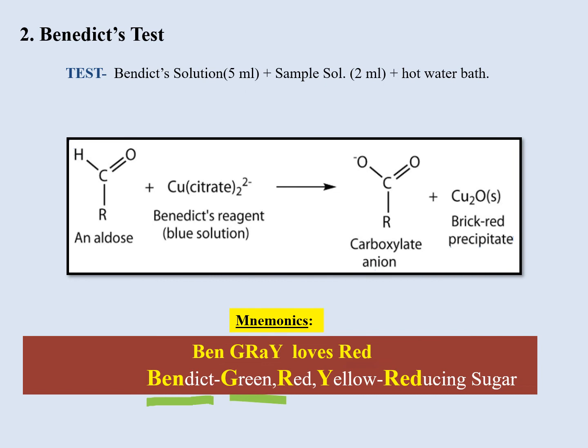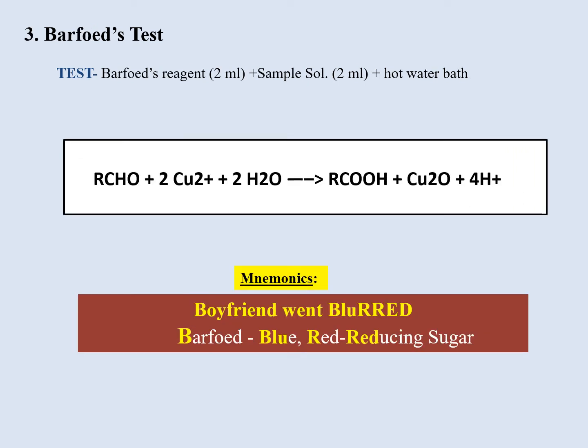Next is Barfoed's test. The mnemonic is 'boyfriend went blurred.' Here 'B' stands for Barfoed, and in the word 'blurred,' 'BLU' stands for blue, 'R' stands for red, and red stands for reducing sugar. So Barfoed's test gives a blue or red color, and red confirms the presence of reducing sugar.